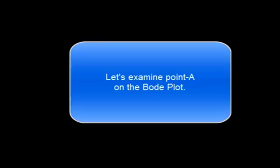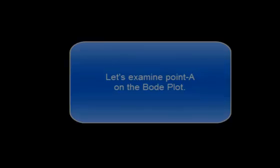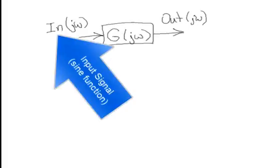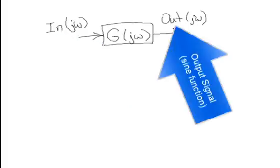Let's examine point A on the Bode plot. Some linear system has an input signal, a sine function, and an output signal, another sine function.